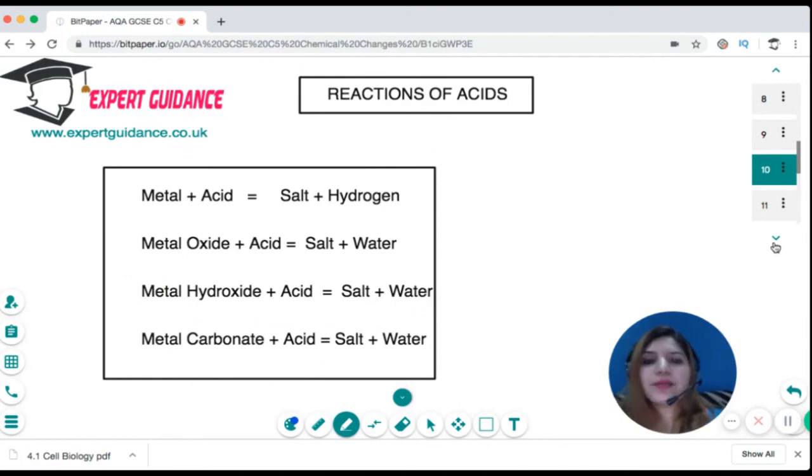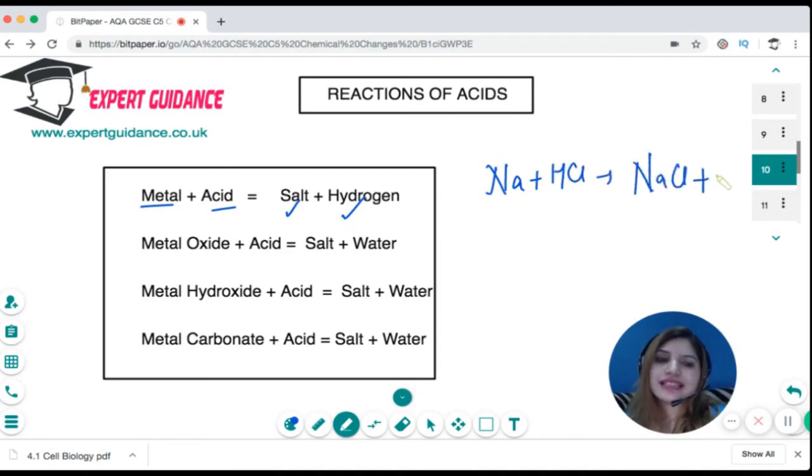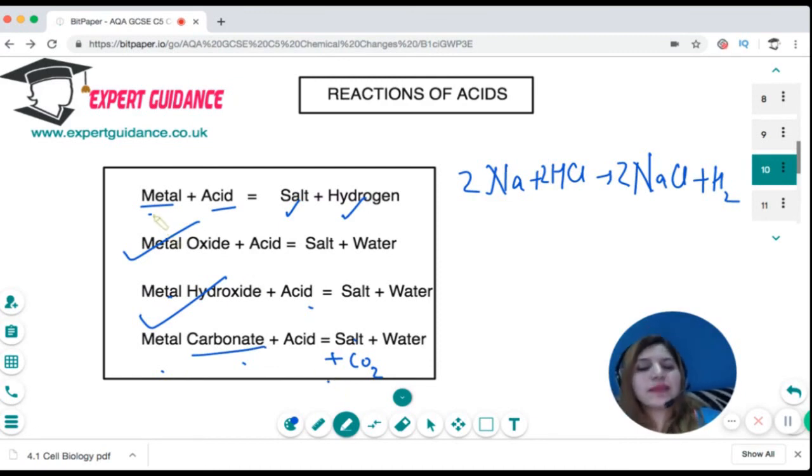Let's summarize reactions of acids. If you have metal and acid with no oxygen, you get salt plus hydrogen. For example, sodium plus hydrochloric acid makes sodium chloride plus hydrogen. Metal oxide plus acid gives salt and water. Metal hydroxide and acid gives salt and water. Metal carbonate gives salt, water, plus carbon dioxide. Everything is salt and water. With carbonate you have CO2, and with just metal there's no water, it's hydrogen. You need to remember the test for hydrogen: it's a squeaky pop test.